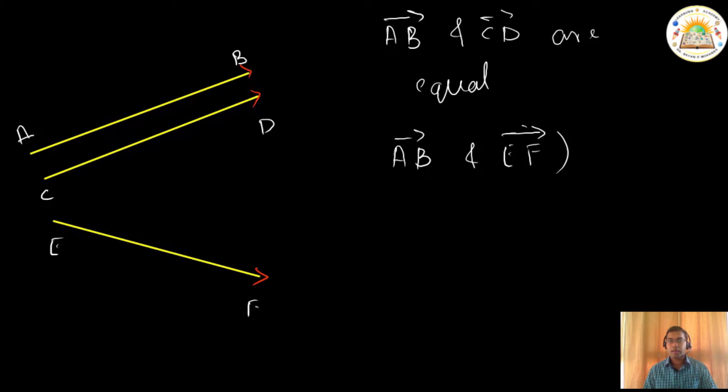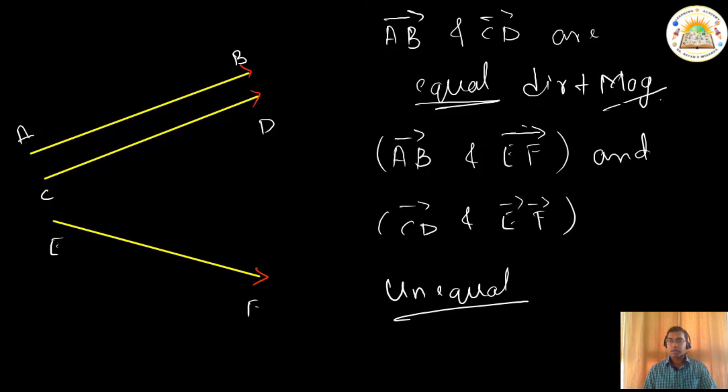I can tell that AB vector and CD vector are equal. And at the same time, AB vector and CD vector, AB we have already seen, CD vector and EF vector are unequal. A vector qualifies to be equal if both the direction and magnitude are the same. If they are different, then these are called as unequal vectors.